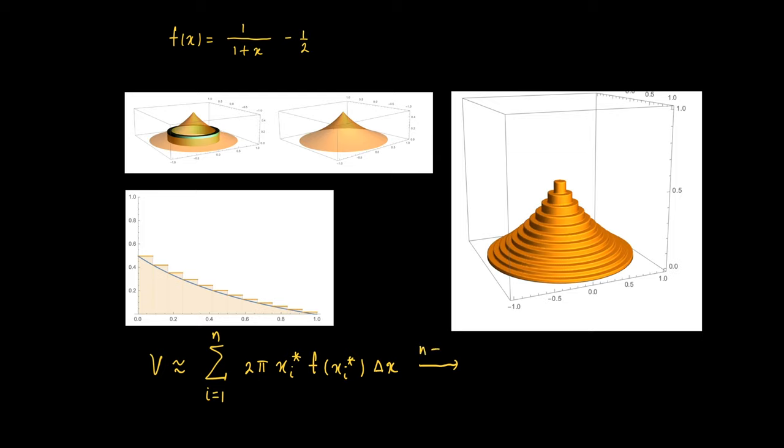And this one converges as n goes to infinity to a definite integral. If we take as a radius the x from 0 to 1, then the solid we obtain is given by the definite integral from 0 to 1 of 2 pi x f(x) dx.